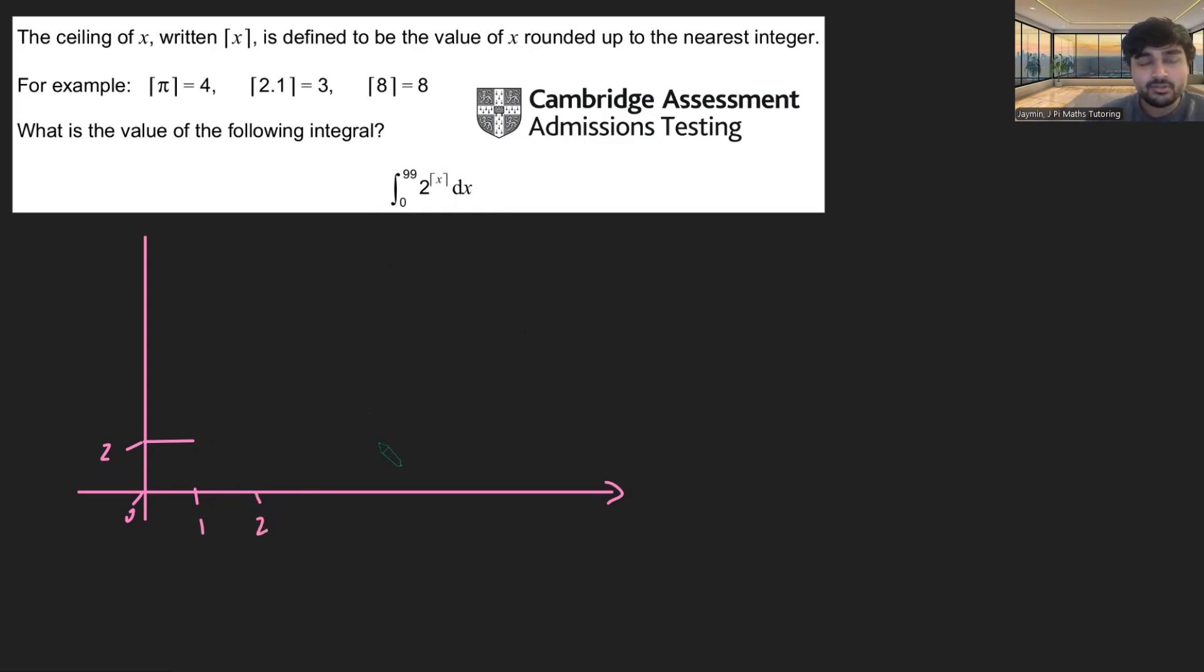What about between 1 and 2? Well, the ceiling of x will be 2, and 2 to the 2 is 4, or 2 squared. So, it's going to look something like that, and that will be 2 squared.